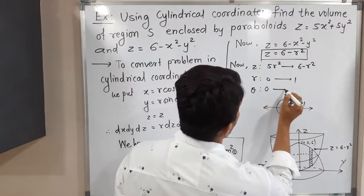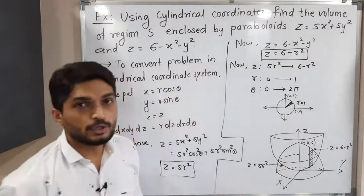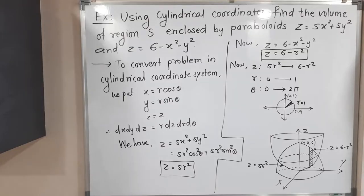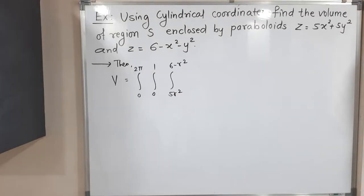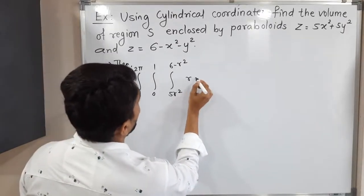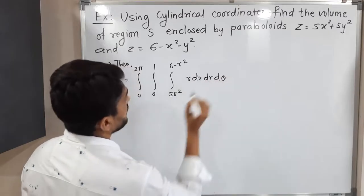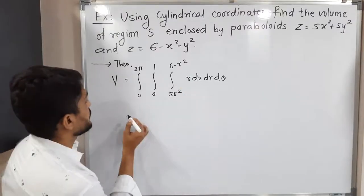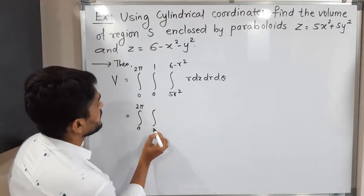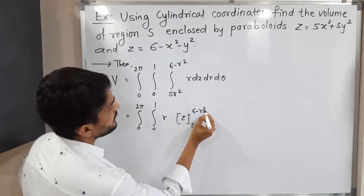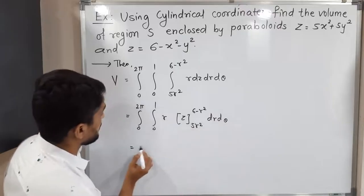So we have all the limits. The volume is V = ∫∫∫ dV = ∫₀²π ∫₀¹ ∫_{5r²}^{6-r²} r dz dr dθ. Integrating with respect to z first, with r constant, we get ∫₀²π ∫₀¹ r [z]_{5r²}^{6-r²} dr dθ = ∫₀²π ∫₀¹ r(6 - r² - 5r²) dr dθ.